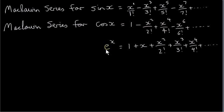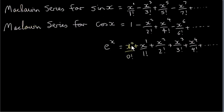We also have a series expansion for e to the power of x. The first term can be written as x to the power of 0 divided by 0 factorial. The second term can be written as x to the power of 1 divided by 1 factorial. The pattern is fairly clear — this is covered in videos in the differentiation section, along with Maclaurin series. So e to the power of x can also be written as the sum of x to the power of r divided by r factorial, where r ranges from 0 to infinity.